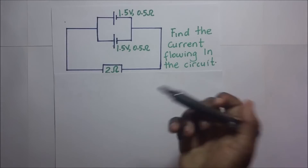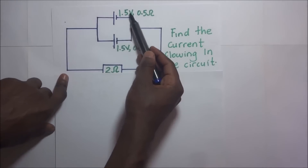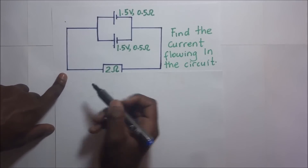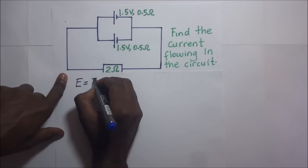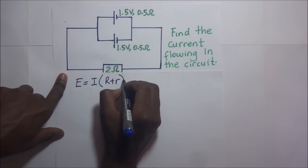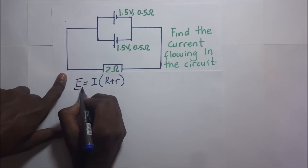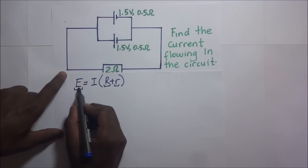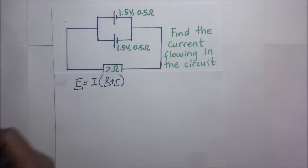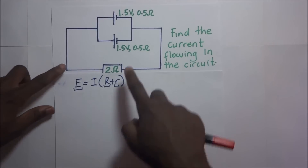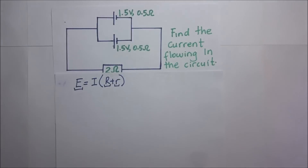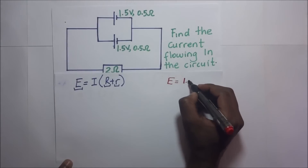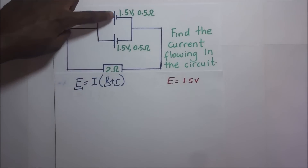These cells have EMF values of 1.5 volts and 0.5 volts, and they both have internal resistance 0.5 ohms. Using our formula EMF equals I times (R plus r), we need to first get the effective EMF and the effective internal resistance. We have two cells in parallel. Take it as though you're dealing with resistors in parallel — the effective EMF is going to be 1.5 volts.